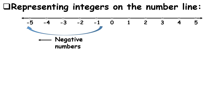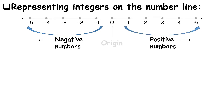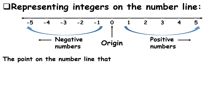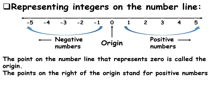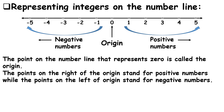Let us now study how to represent integers on the number line. The point on the number line that represents zero is called the origin. The points on the right of the origin stand for positive numbers, while the points on the left of the origin stand for negative numbers. Positive and negative numbers can also be represented on a vertical line.